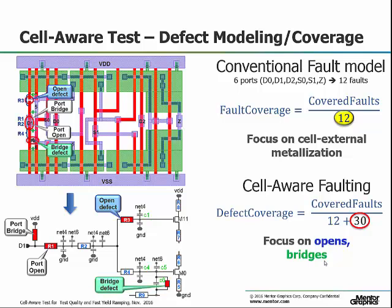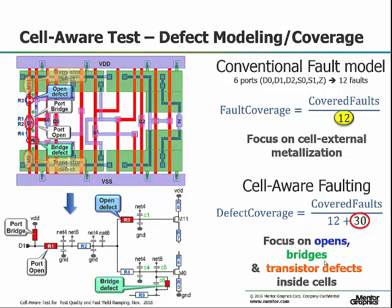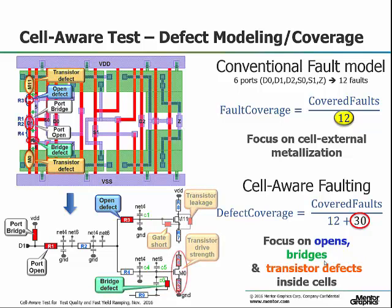A typical 3-input MUX, traditionally modeled with 12 static defects, will now be modeled with 42 defects. This increases the quality of test, which reflects on both the DPPM and the diagnosis resolution.